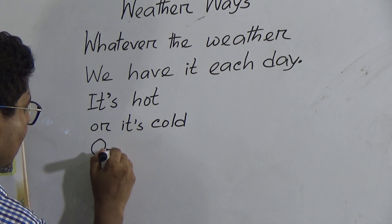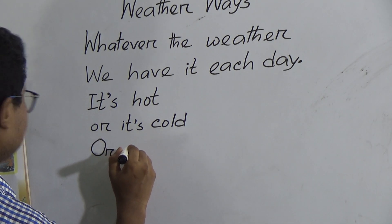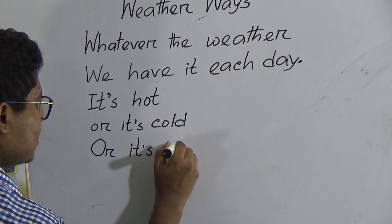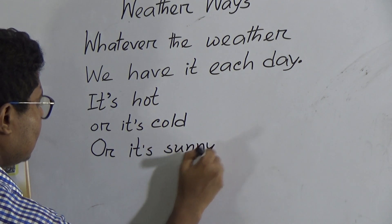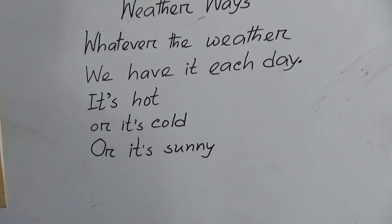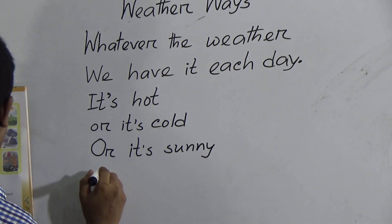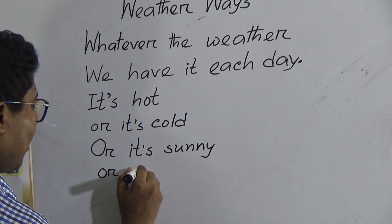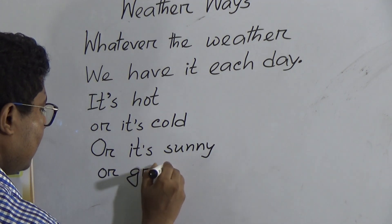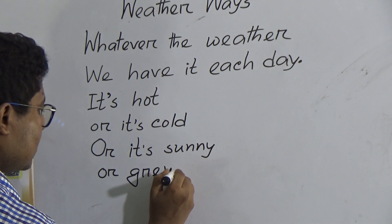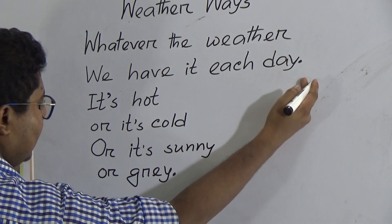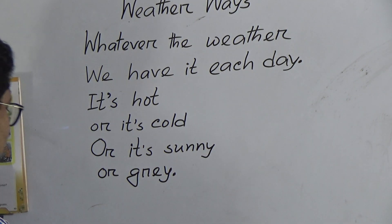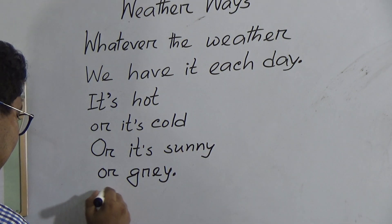Next line: 'or it's sunny' — S-U-N-N-Y. The 'or' here will be capital. Next: 'or gray' — G-R-E-Y. We have to put a full stop after 'gray'. So one full stop here and one full stop earlier. We have now written six lines in total.